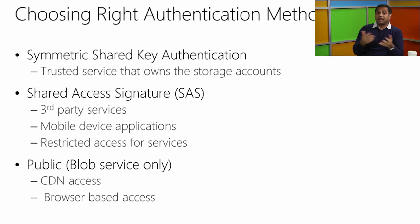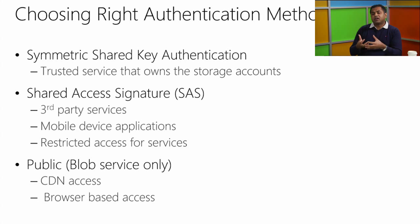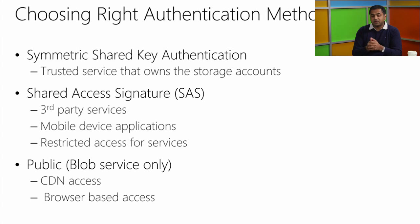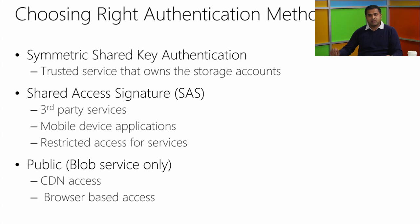Mobile device applications — apps running on phones or tablets — are a common case where you should use shared access signatures, as it's not secure to embed your secret key in an app. For public access, if you have images to serve through a CDN across geo regions efficiently, you make it public access and serve blobs from CDN or browser-based access. For a public blog where you don't want to restrict read access, the public property makes your blobs read-only — you cannot write or delete.